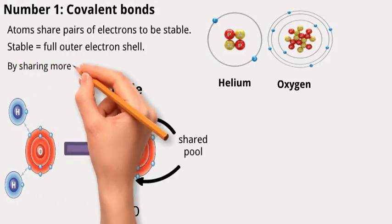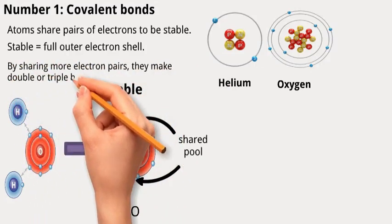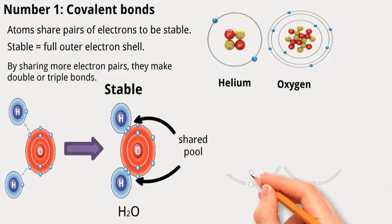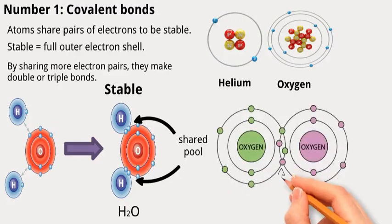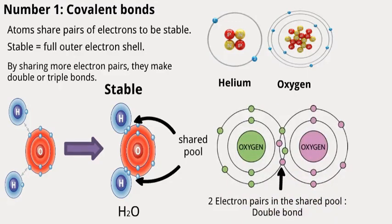By sharing more electron pairs, they make double or triple bonds affecting how molecules look. For example, oxygen O2 shows double covalent bonds. It is important to notice that when atoms connect with covalent bonds, energy is released, but breaking the bond later needs energy input.